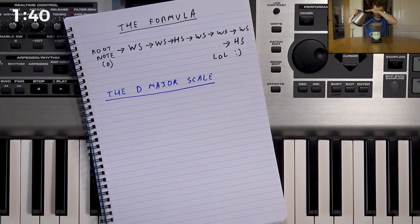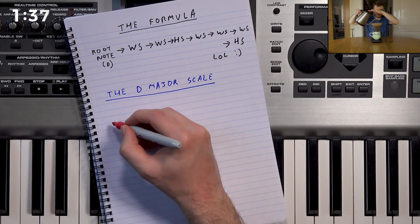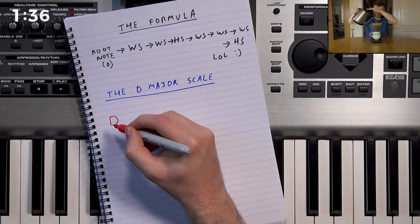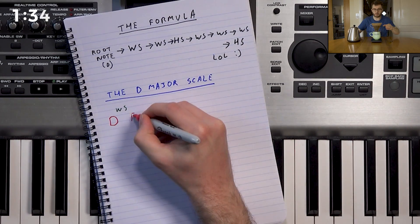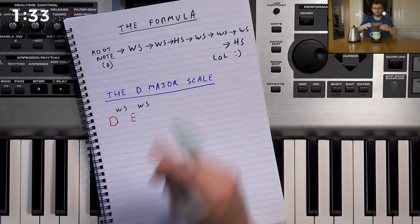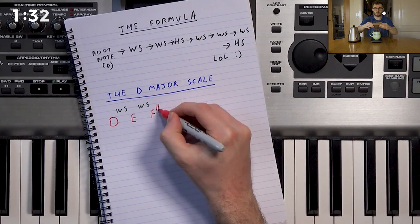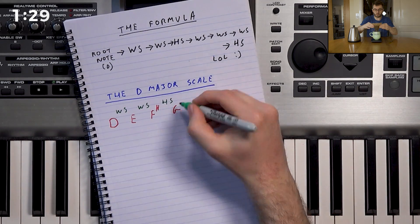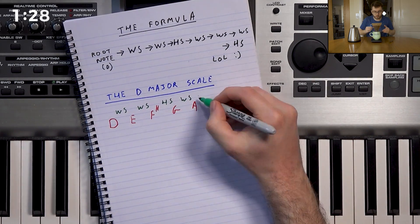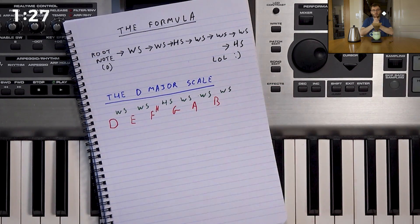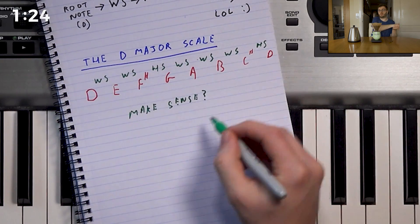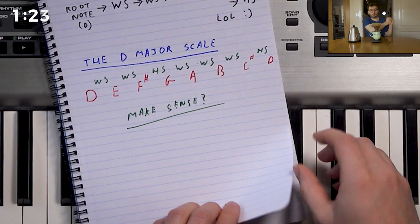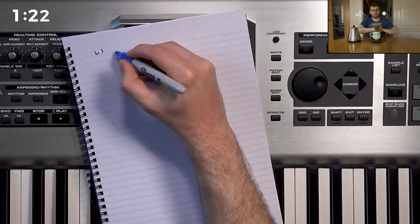Let's use this whole step, half step relationship to work out the D major scale. We'll start with our D, move up by a whole step to E, another whole step to F sharp, a half step to G, another whole step to A, a whole step to B, a whole step to C sharp, and lastly a half step back to our D. Making sense? We're doing good — stay with me.